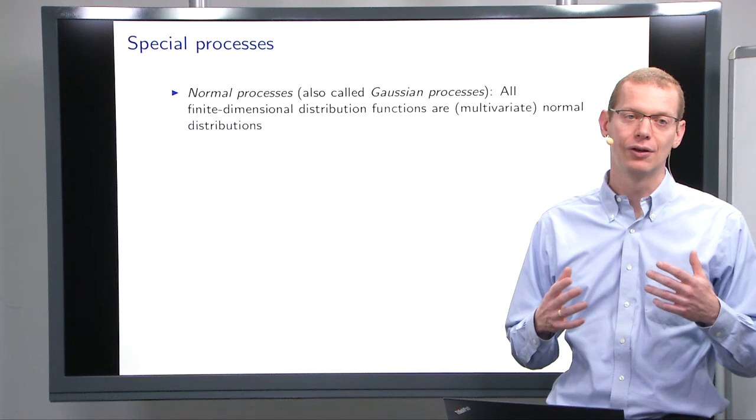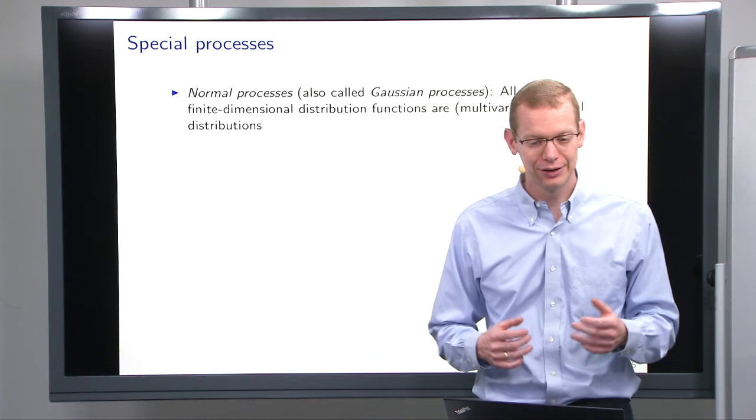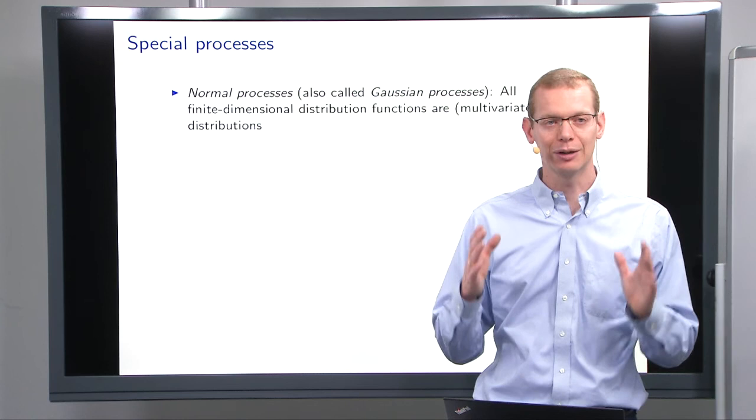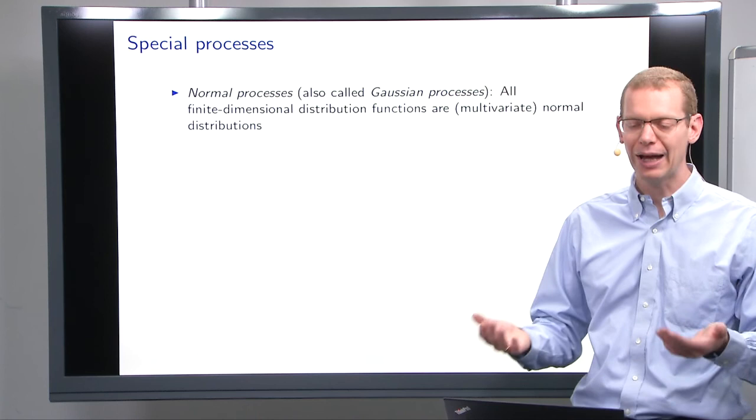So, as I said, we will focus on Gaussian processes, also called normal processes. And in those cases, then all the finite dimensional distribution functions, they can be treated as multivariate normal distributions. So, we are back to what we looked at in the previous lectures.